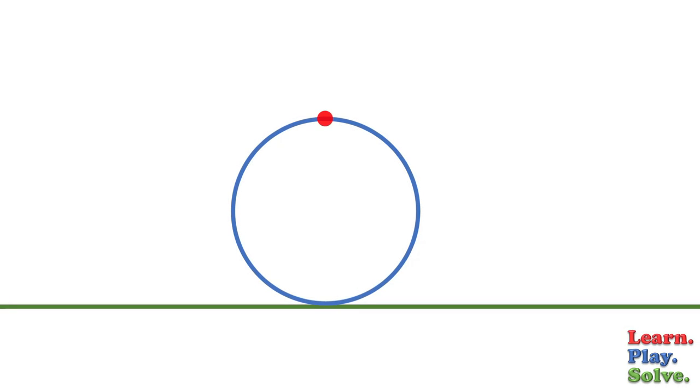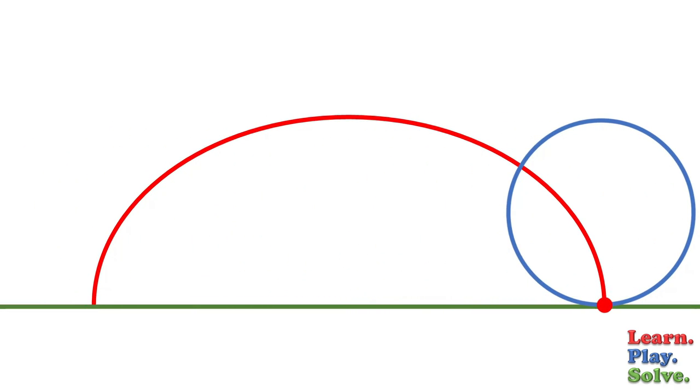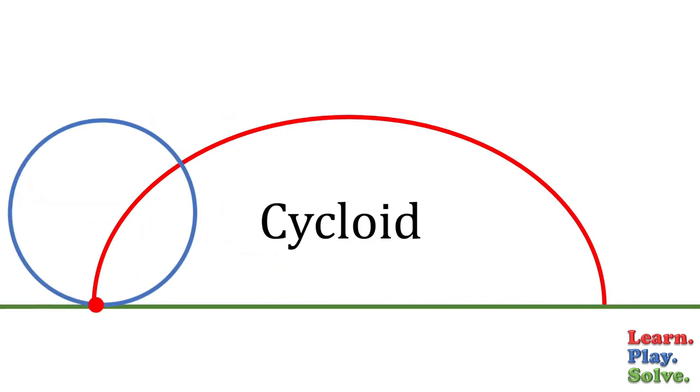If you pick a point on any circle and follow that point as the circle rolls along a straight line, the curve it traces out is called a cycloid.